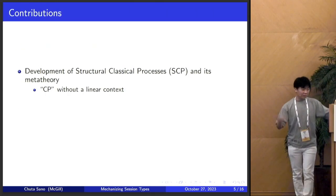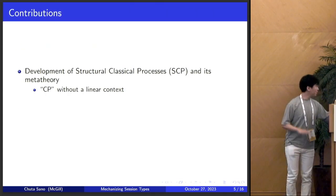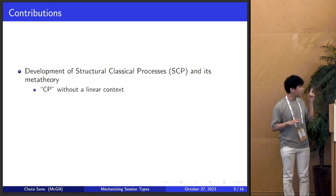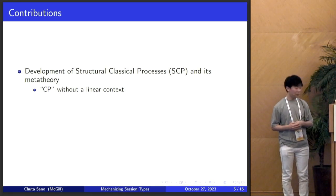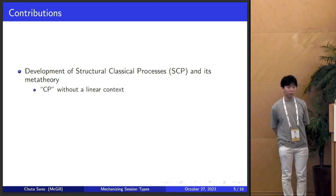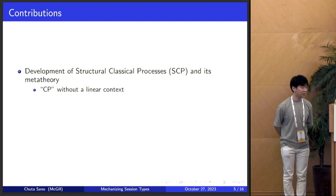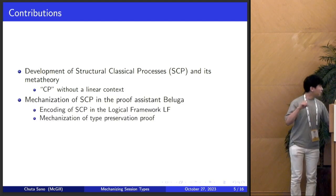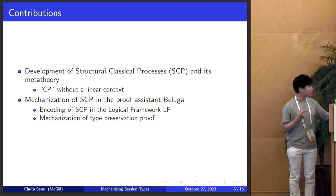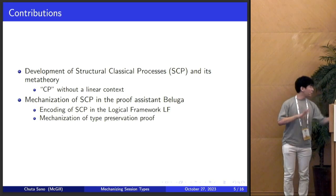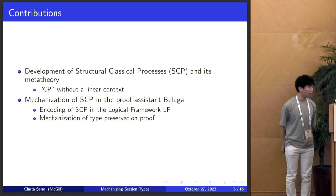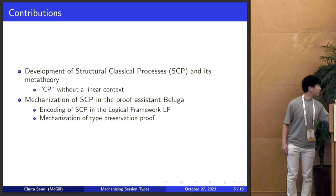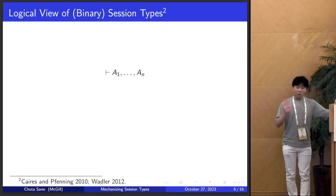To set our expectations, I'm going to be talking about development of a new calculus called structural classical processes. The main summary is that we're going to outright remove the requirement of linear context in CP. We're also going to be mechanizing that in the proof-assistant Beluga, and mostly I'll be talking about the encoding of the syntax in the logical framework LF.